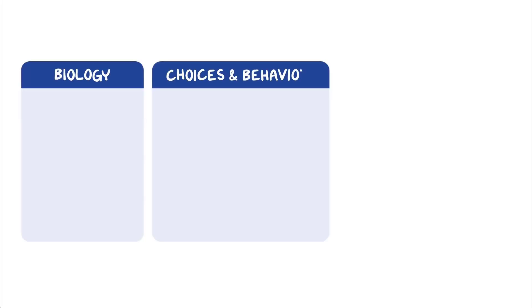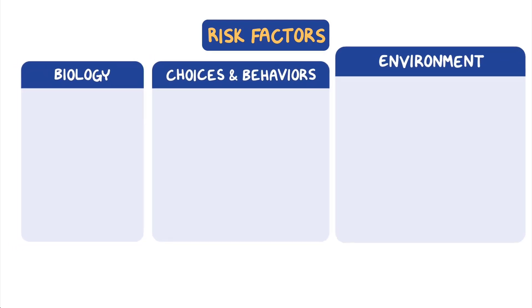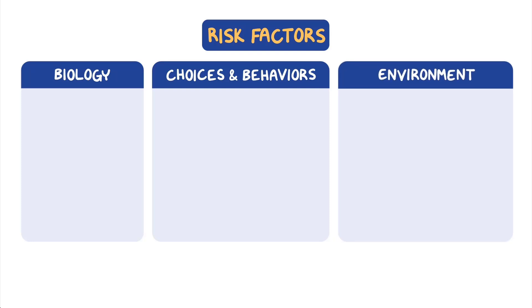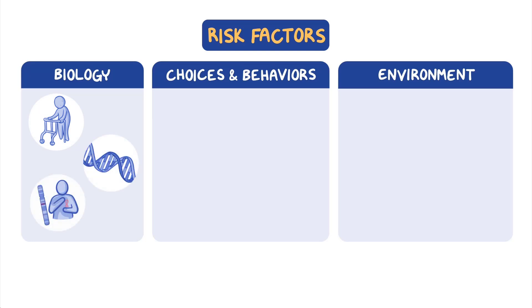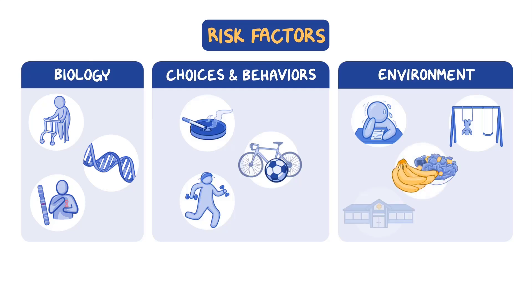A person's health is affected by many factors, including their biology, their choices and behaviors, and their environment. Risk factors can be roughly categorized into three groups: biological risk factors, behavioral risk factors, and environmental risk factors. Some factors that influence health, such as a person's age or their genes, are impossible to change. However, some factors can be changed by personal behaviors, such as whether they smoke or exercise. But many factors are complex — they may be related to the environment around a person, such as stress at a job, having safe areas outside to play, or access to resources like healthy food, healthcare, and quality education.